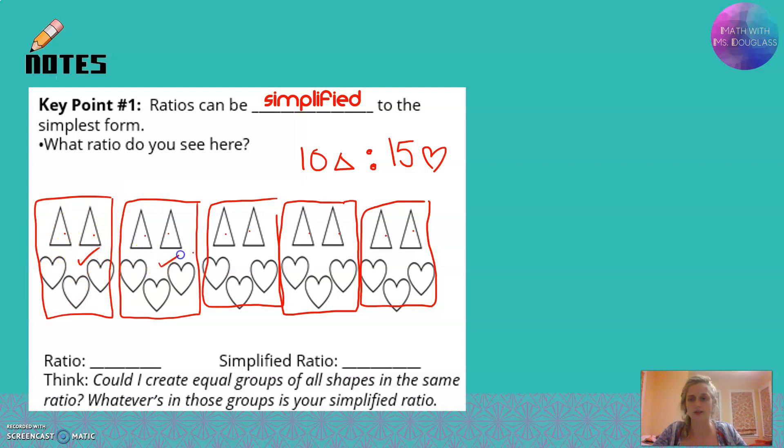Two triangles to every three hearts. Yep, here that works, here that works, here that works. Your simplified ratio is two triangles to every three hearts.